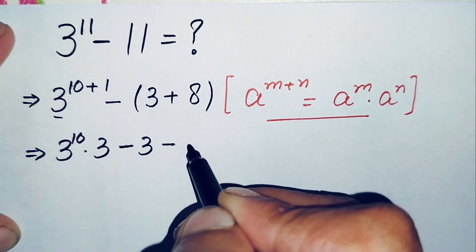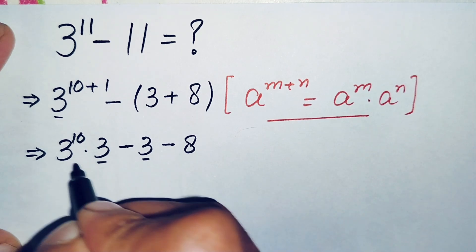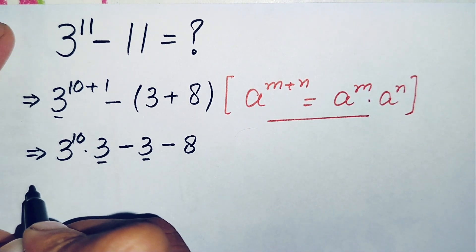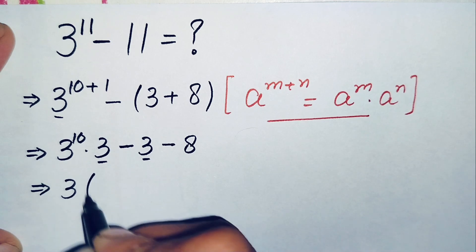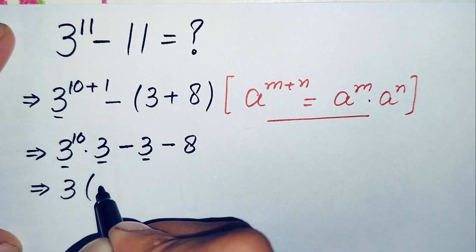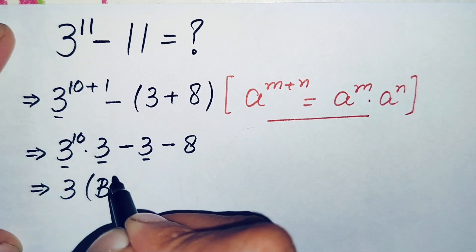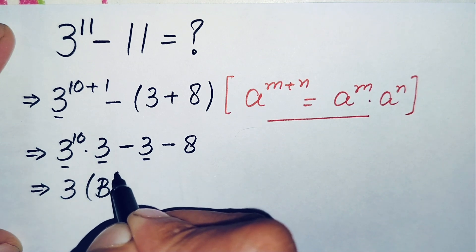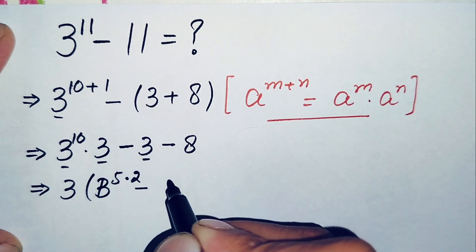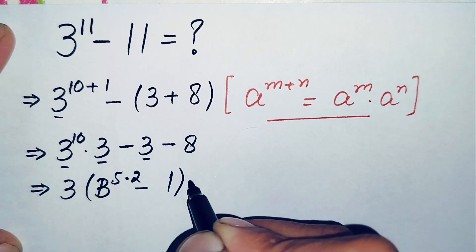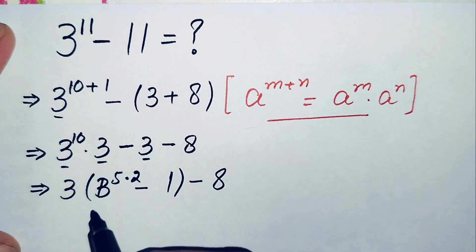Now here we will take 3 common from the first two terms. Taking 3 common, 3^10 is left. But we can write this 10 as 5 times 2, which equals 10. So we have 3 times (3^(5×2) minus 1) minus 8.